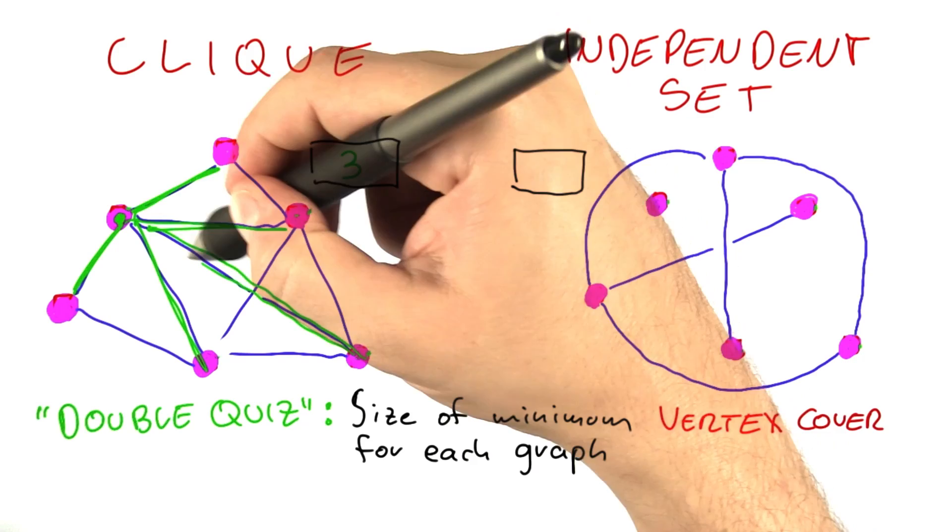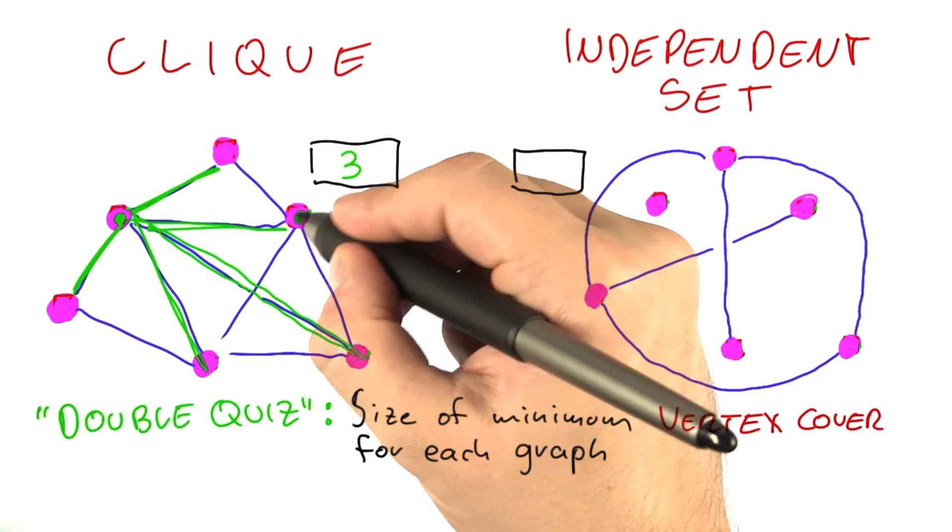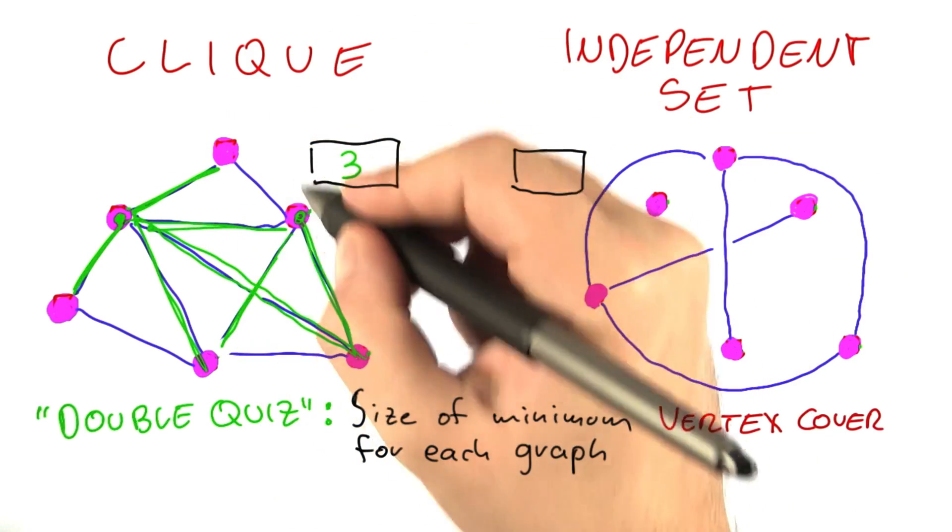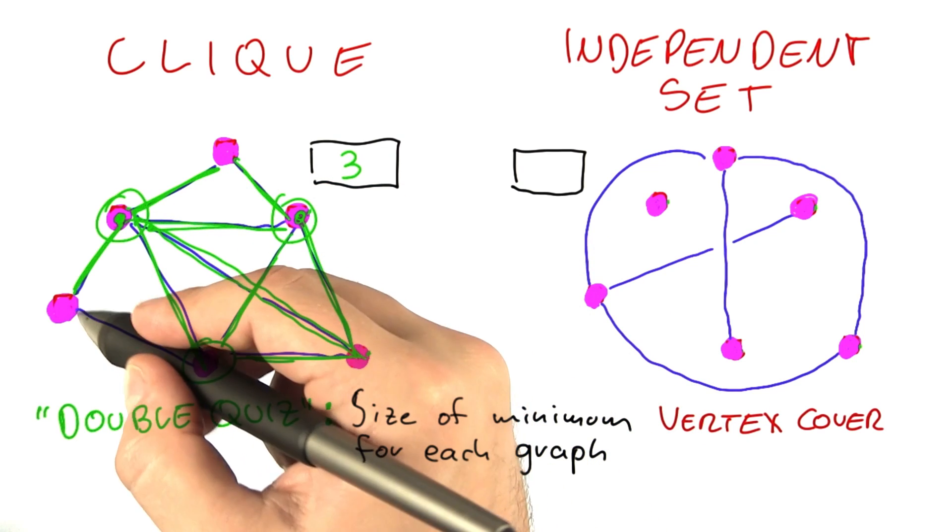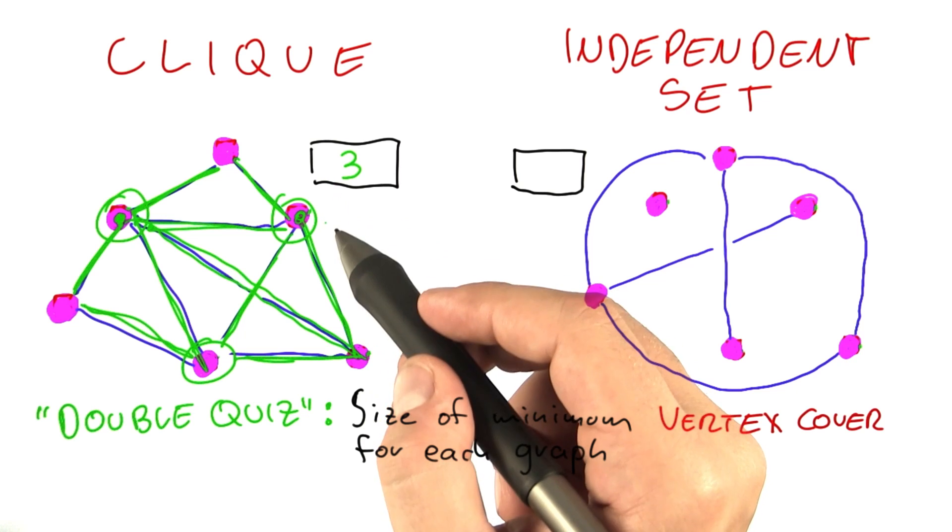Which would cover all of those edges here. Then we could select this one, covering all of those edges. And finally, we could select the one down here. So all edges are covered, selecting just three vertices.